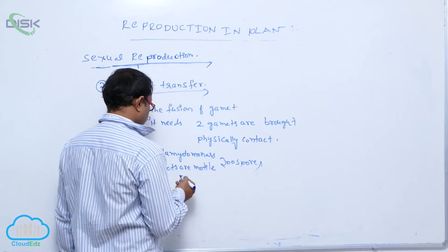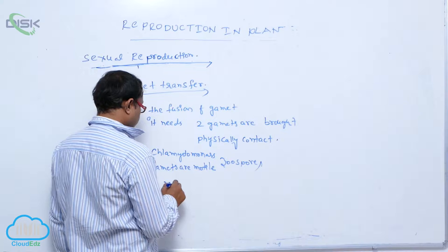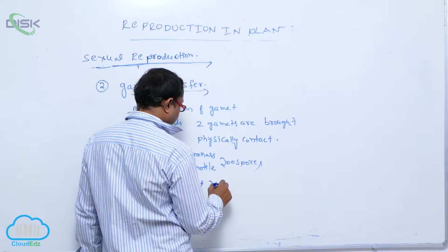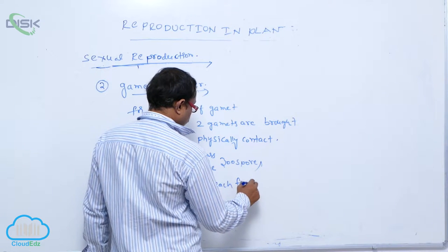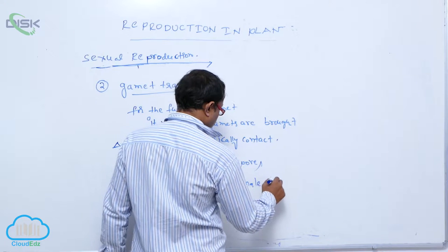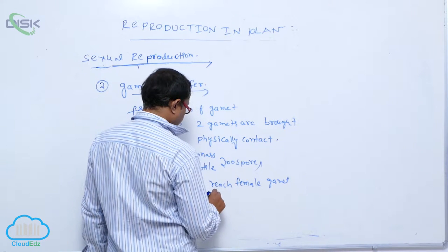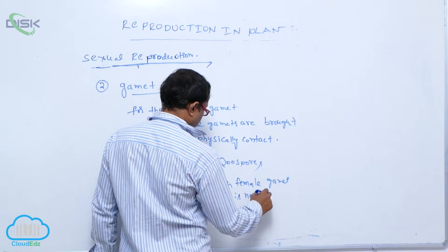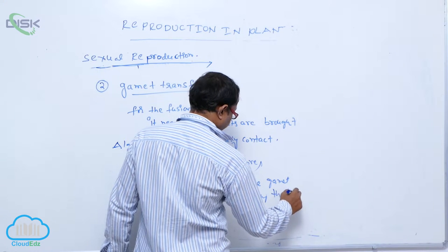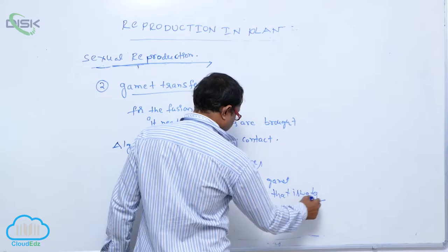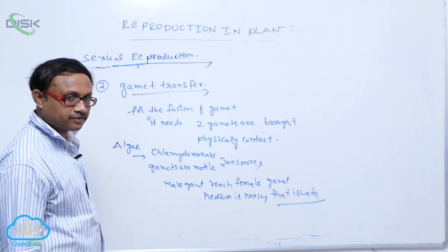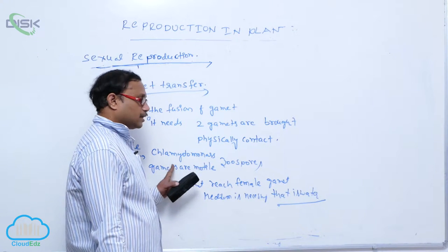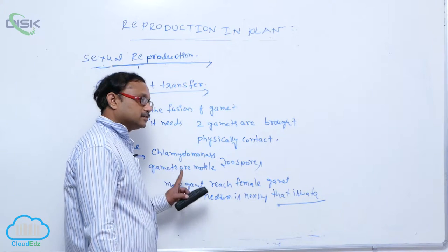For that, male gamete to reach female gamete, medium is necessary. That is water. Male gametes are swimming in the water to reach the female gamete, and both participate in the fusion to form that zygote.